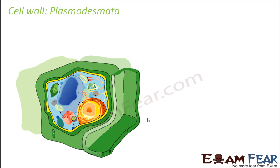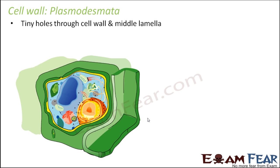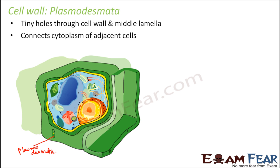Plasmodesmata are tiny holes through the cell wall and middle lamella. As you can see in this picture, these tiny holes are the plasmodesmata. The middle lamella joins two adjacent cells, and those two cells need to be able to exchange materials with each other. For that purpose, there are tiny holes through the cell wall and middle lamella through which their cytoplasms can get connected. So plasmodesmata connect the cytoplasm of adjacent cells, allowing them to exchange materials through these tiny holes.